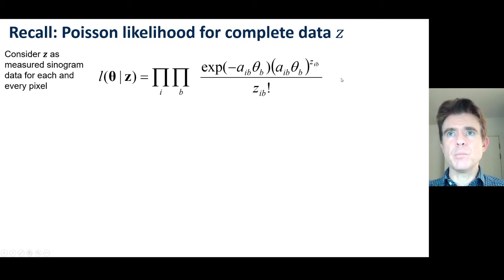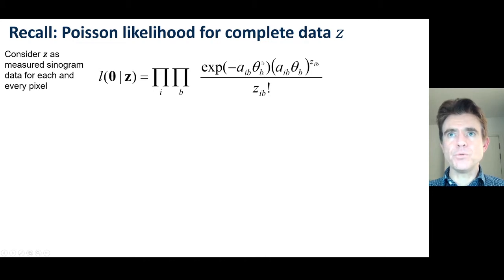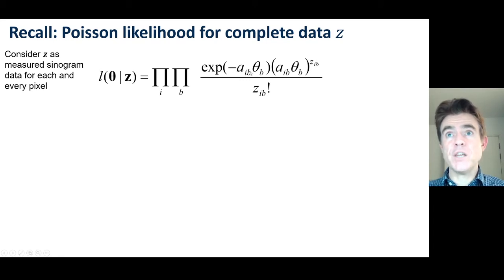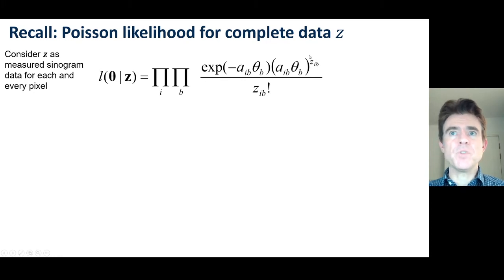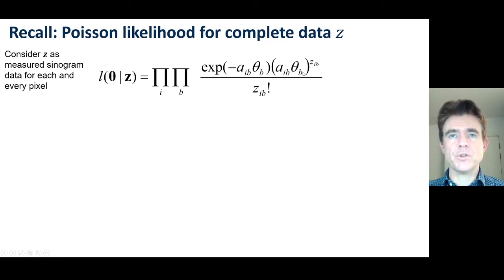We use the Poisson probability with mean given by a component of the system model A with the image estimate theta_B. This model gives the mean value of the complete data element Z_{IB}: the mean is just A_{IB} theta_B — the Poisson probability with the mean defined accordingly.